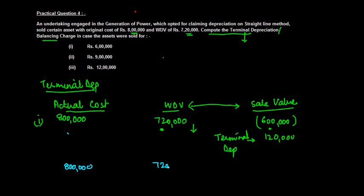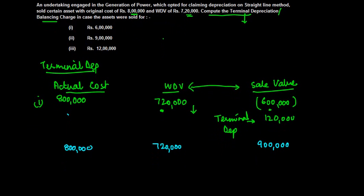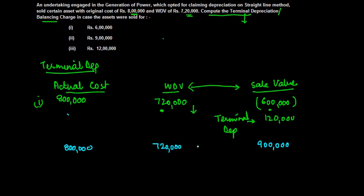Your written down value is 7 lakh 20,000, but the sale consideration is 9 lakh. Now when you have the sale consideration, again two things which you need to do is compare it with the written down value and the actual cost.